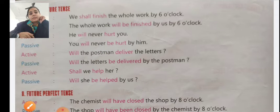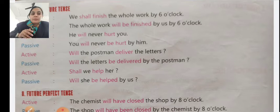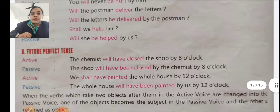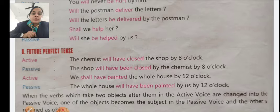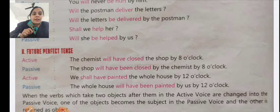Active voice: 'Shall we help her?' Passive voice: 'Will she be helped by us?' Future perfect tense — Active: 'The chemist will have closed the shop by eight o'clock.' Passive: 'The shop will have been closed by the chemist by eight o'clock.'